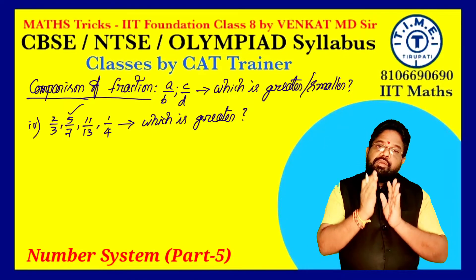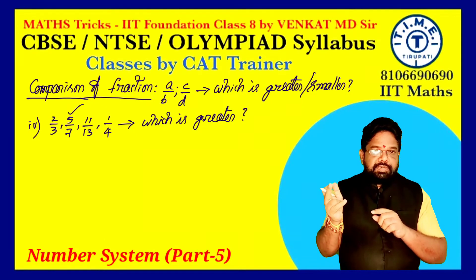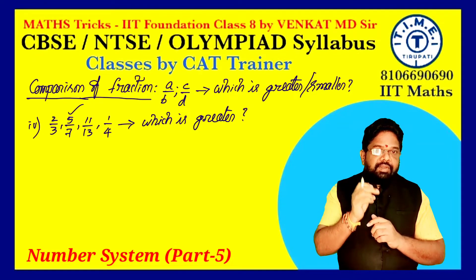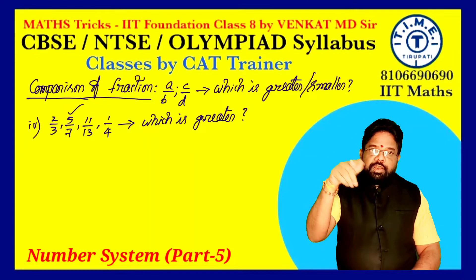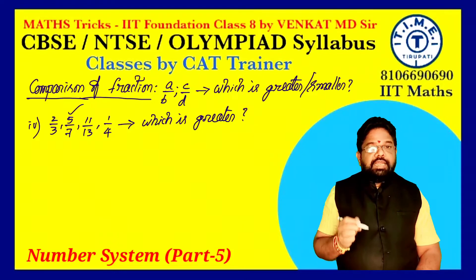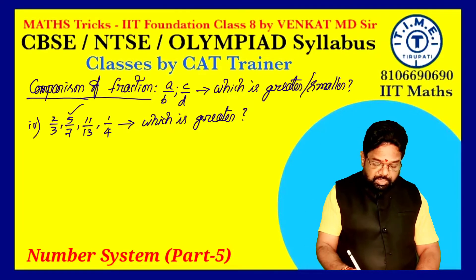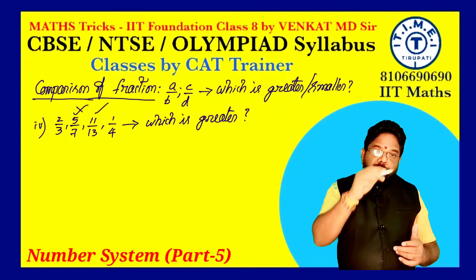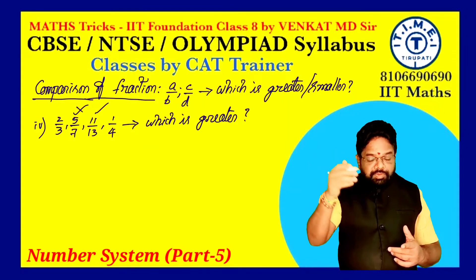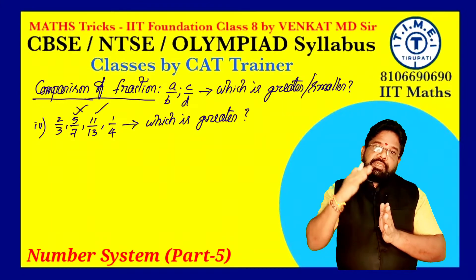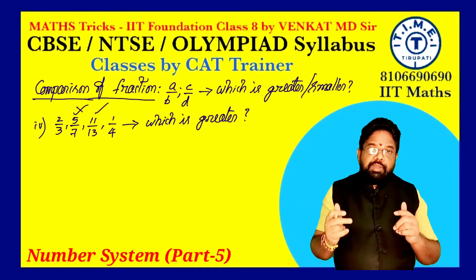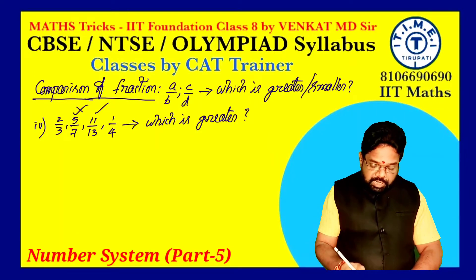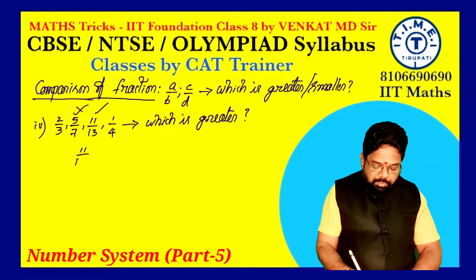From the first two fractions, 5/7 is greater. Now compare that with the third fraction: 5×13=65, 11×7=77. Since 77 is greater, 11/13 is greater than 5/7. Now compare 11/13 with 1/4: 11×4=44, 1×13=13. Since 44 is greater, 11/13 is the greatest among all four fractions.